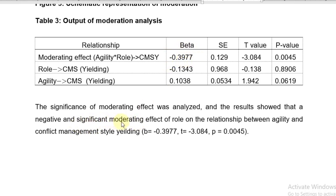So there is a negative effect of the moderating variable. So a negative and significant moderating effect of role type on the relationship between agility and conflict management style yielding exist. The B is equal to minus 0.3977. It's beta, the coefficient of the regression. T is equal to minus 3.084. I picked this value from here and P is equal to 0.0045.